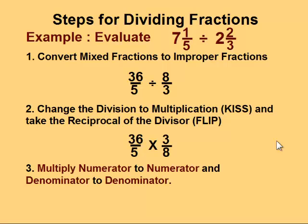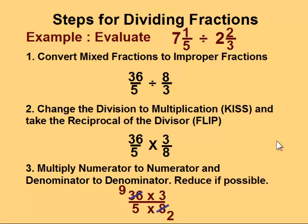Now we follow the steps for multiplying fractions. We multiply the two numerators together, and the two denominators together. Remember, at this point, this is where you check to see if a fraction reduces. Look carefully. 36 and 8 can both be divided by 4. 36 divided by 4 is 9, and 8 divided by 4 is 2.